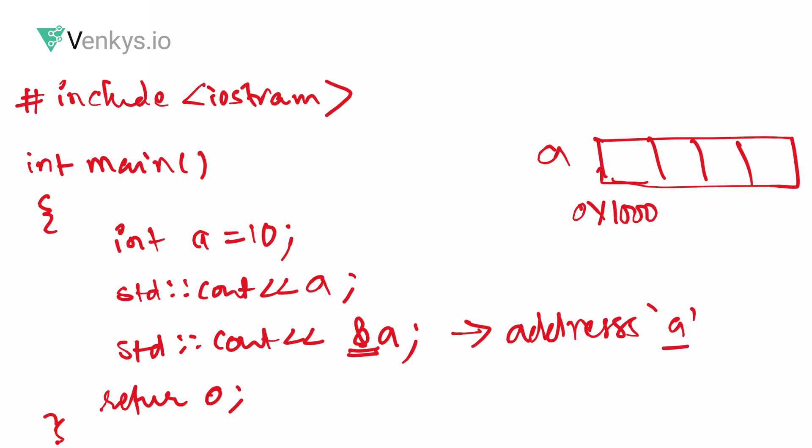The ampersand symbol is always prefixed to a variable name. It could be a basic data type, an advanced data type, or a derived data type — you can use it in front of a class, in front of a structure, anything. This is a prefix operator used to print the address of something.